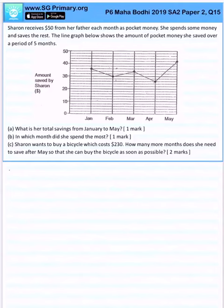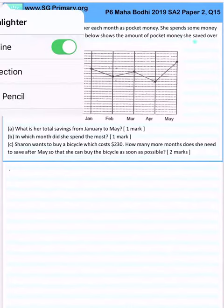Sharon receives $50 from her father each month as pocket money. She spends some money and saves the rest. The line graph shows the amount she saved.